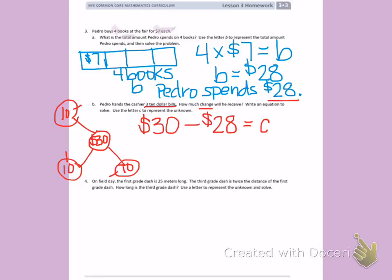Subtracting $30 minus $28, C equals $2. Pedro's change is $2.